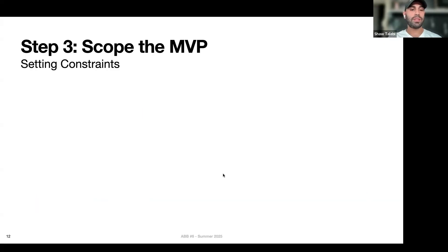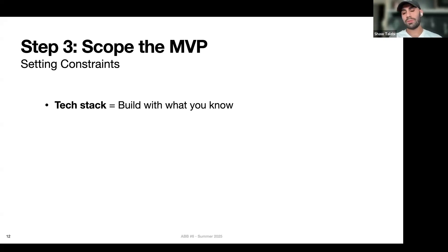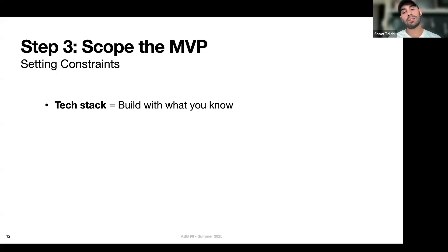Another aspect of scoping the MVP is setting the constraints. This can be all sorts of things, like the tech stack. My perspective is you always want to build with what you know, because you don't want to spend three months trying to learn a new framework or technology. In that time, everything has completely changed — new models have shipped, new frameworks have come out. Build with what you know, because that's what's going to allow you to build the fastest, and that's the most important thing in the AI landscape today.